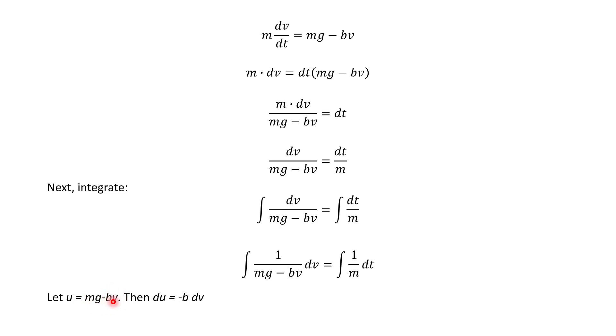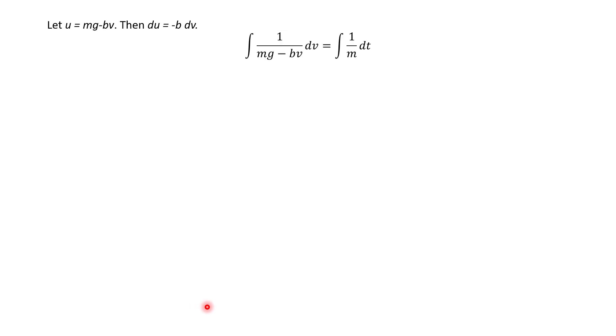The derivative with respect to v here of negative b times v would just be negative b times 1. So that's why we have du equals negative b dv.